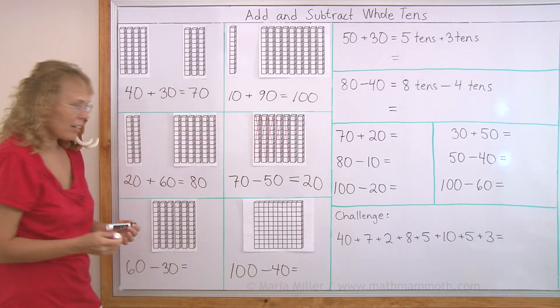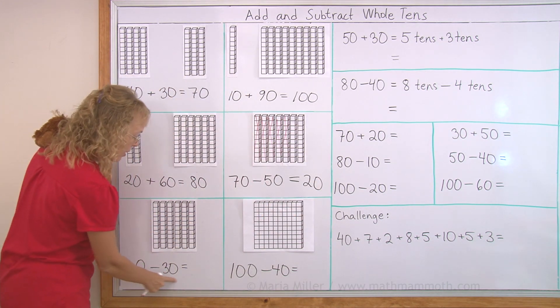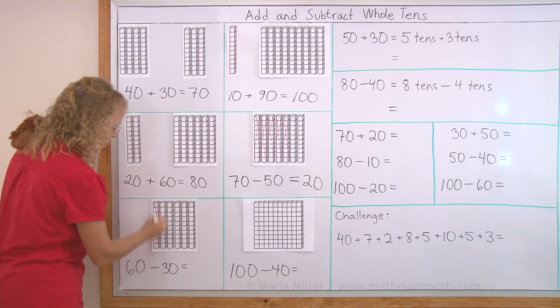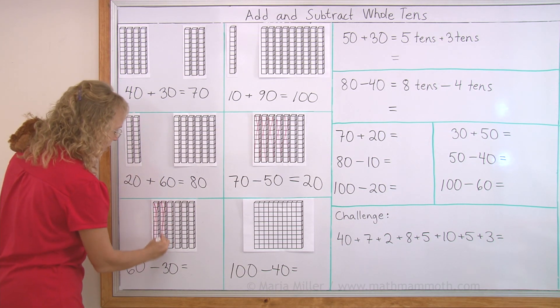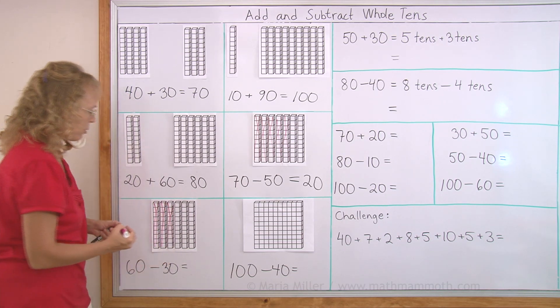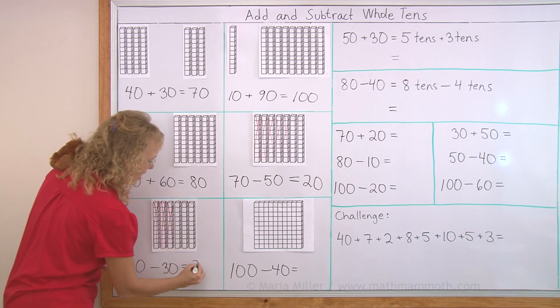Same here. If I have 60 and I take away this much, three tens or 30. That ten, that ten and that ten are crossed out. So I have 30 left.